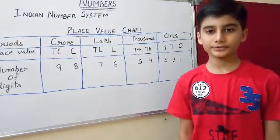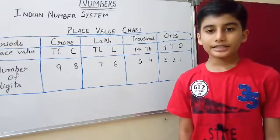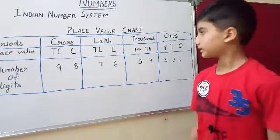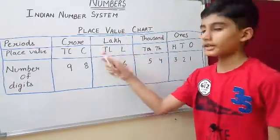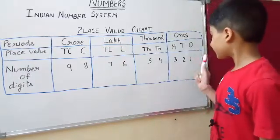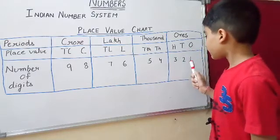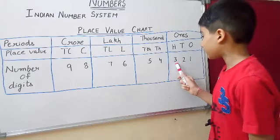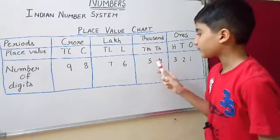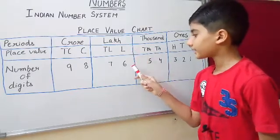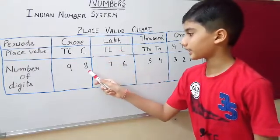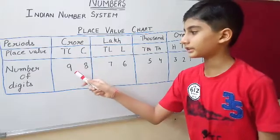Now let us see the place value chart of the Indian number system. The place value chart helps us to read and understand large numbers. There are four periods: ones, thousands, lakhs, and crores. In the lakhs place there are two digits. In the hundreds place there are three digits. In the thousands place there are four digits. In the ten-thousands place there are five digits. In the lakhs place there are six digits. In the ten-lakhs place there are seven digits. In the crores place there are eight digits.